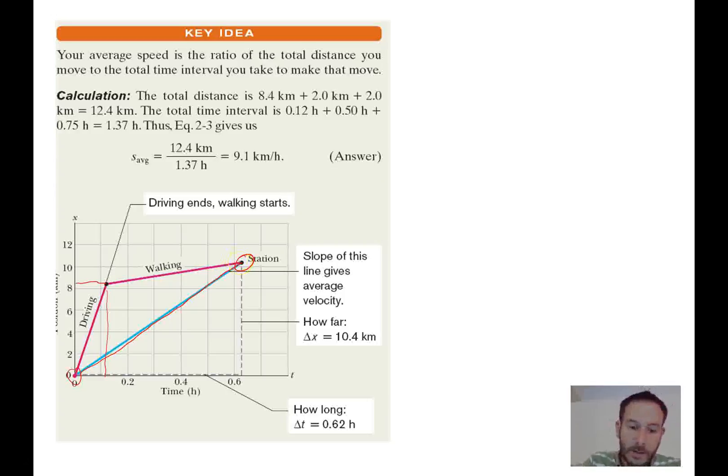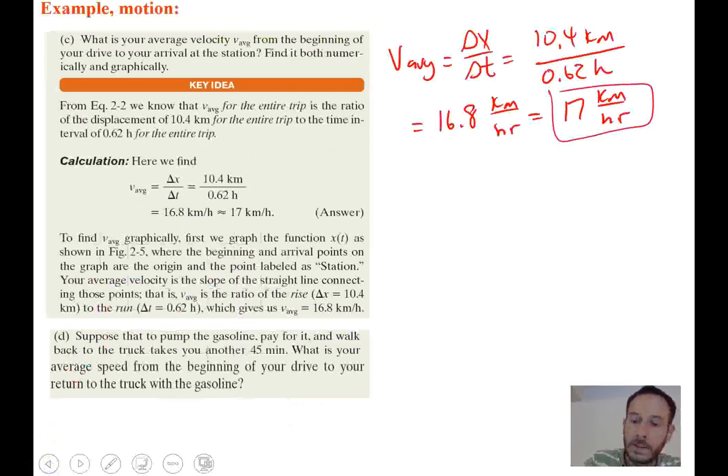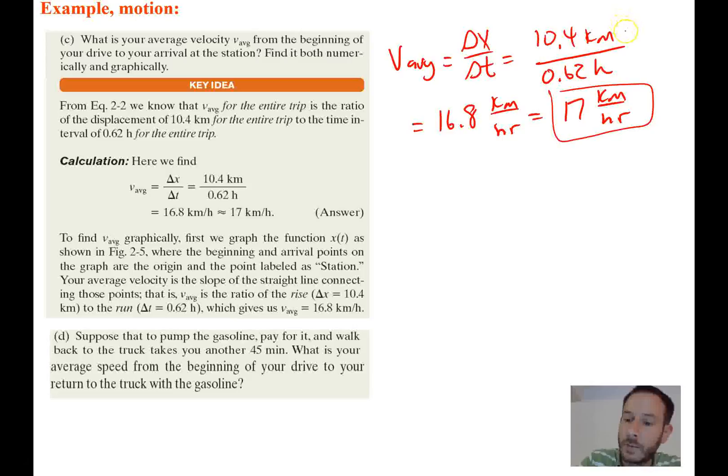So again, we can take these points, go back a slide, take the points, divide them, which is basically the exact same thing here. It's going to be 10.4, and we're going to divide it by 0.62 hours. And that's going to get us 17 kilometers an hour. So you could have done it working it out mathematically or with a graph.